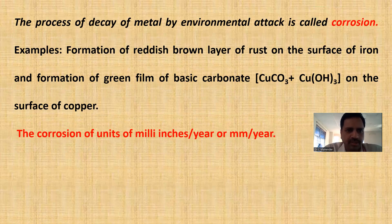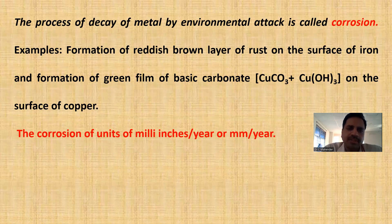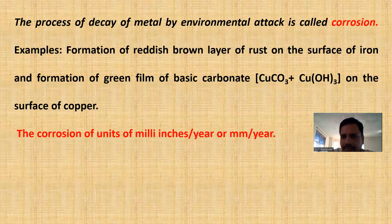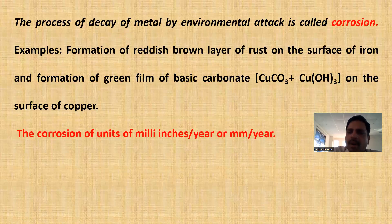This is the official definition. For example, the formation of a reddish-brown layer of rust on the surface of iron, and the formation of a green film of basic carbonate on the surface of copper, are called rust. The green film formed on copper is copper carbonate and copper hydroxide — this is called rust formation.